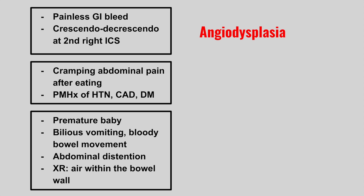The next patient has cramping abdominal pain after eating and a history of hypertension, CAD, and diabetes — this is mesenteric ischemia. This occurs when there's a blockage in the vessels supplying blood to the GI tract. These patients often don't feel like eating and lose weight because of the pain that happens with eating.